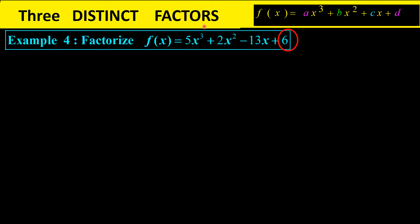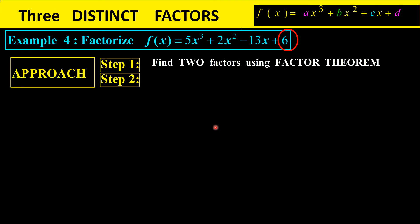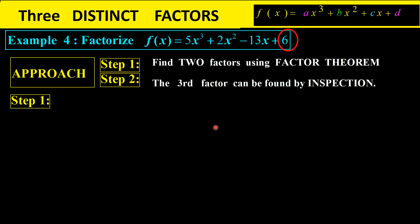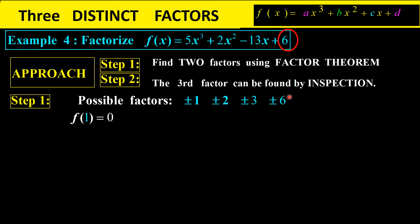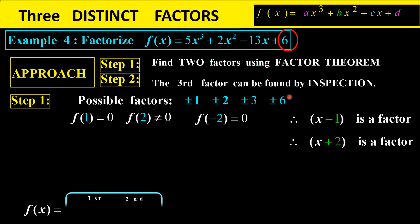Another example with a leading coefficient of 5 and a constant of 6. Same approach: find two factors using the factor theorem, then the third by inspection. Factors of 6 go from plus or minus 1 up to plus or minus 6. f(1) works, giving x minus 1 as a factor. f(negative 1) doesn't work. f(2) doesn't work. f(negative 2) works, giving x plus 2 as the second factor.